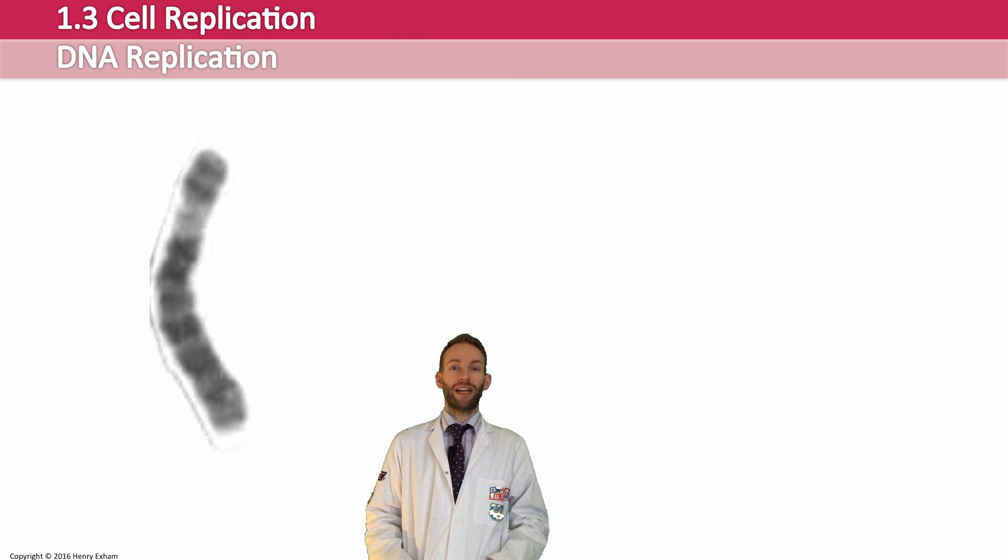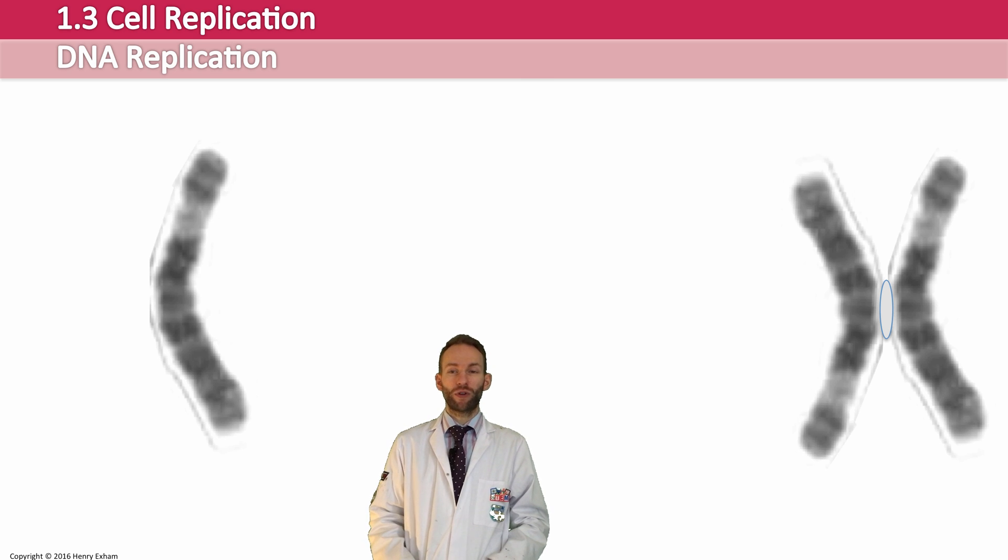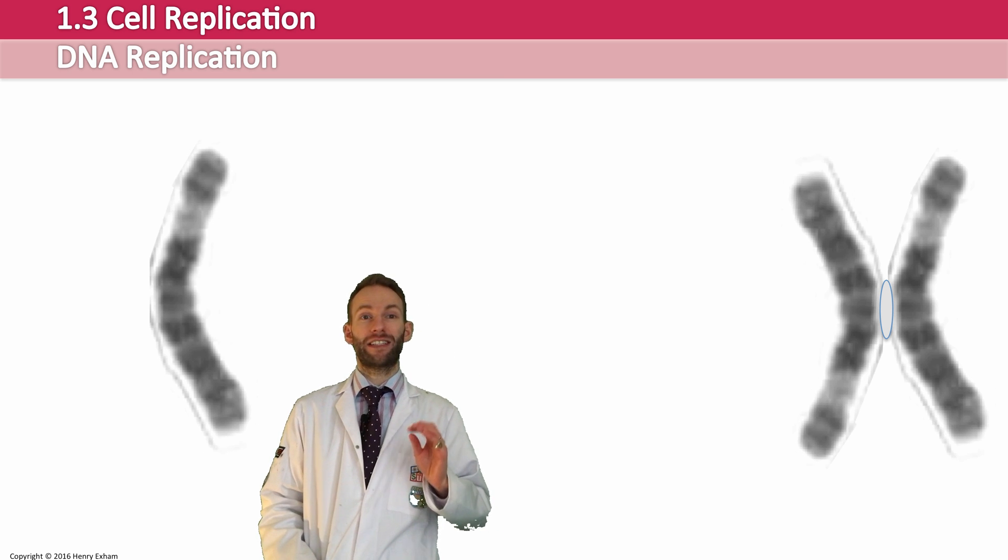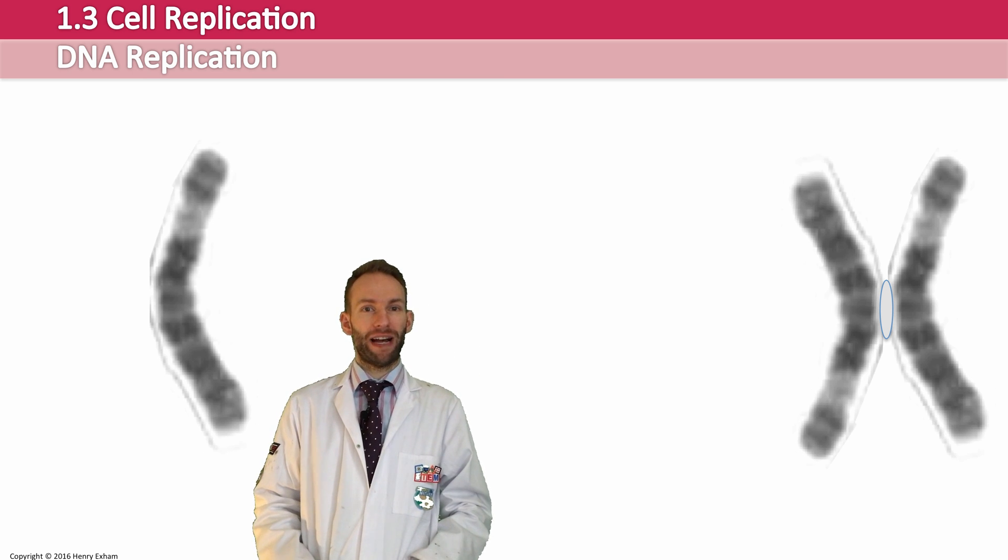But before that cell divides, to make sure that the new cells can get one copy each, it's going to have to become this double chromosome with two sister chromatids joined in the middle there by a centromere. So to copy a chromosome like this, you're going to have to do a process called DNA replication. And that's what this video is all about.